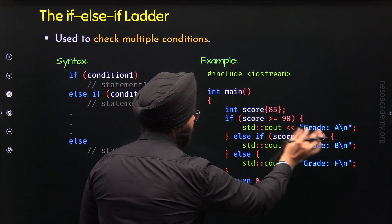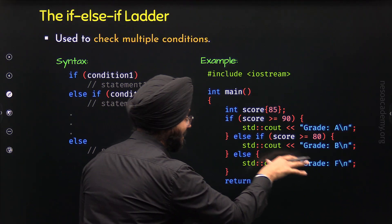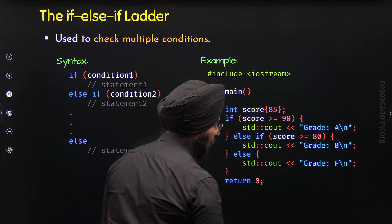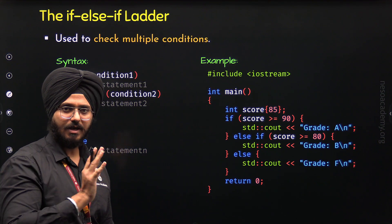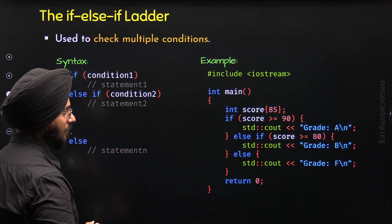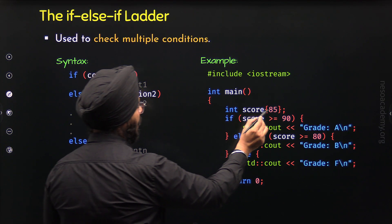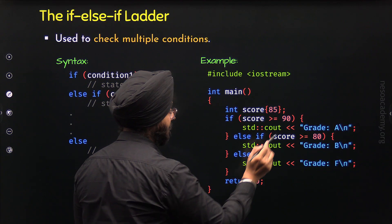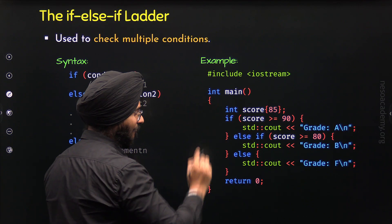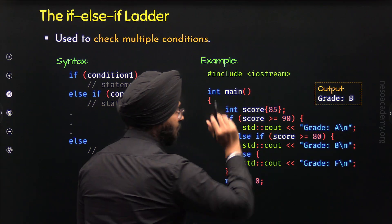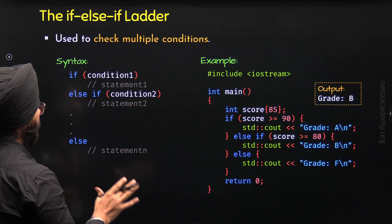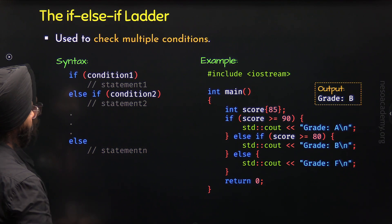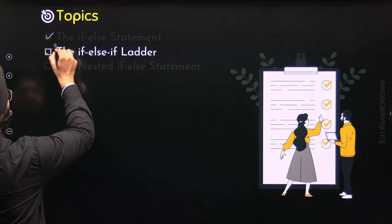If at all this condition is not satisfied, then we are sure the score is less than 80. In that case, the ELSE block will execute and grade F will be displayed on the screen. We have value 85 in the score variable — this value is less than 90 but it is greater than 80. Therefore, grade B will be displayed on the screen. With this, it is clear what IF ELSE IF LADDER is and how to use it in a C++ program. We have now understood the second topic.